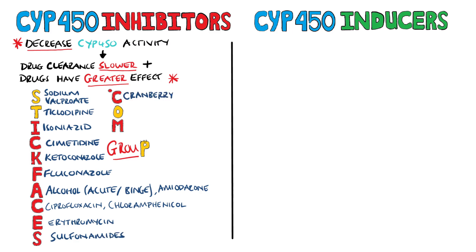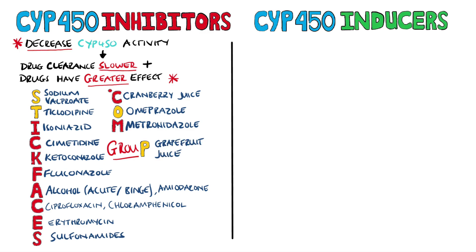The third C is to remind you of cranberry juice. O is for omeprazole, which is a proton pump inhibitor used to reduce stomach acid production. M is metronidazole, an antibiotic commonly used in GI infection that also has antiparasitic properties. Finally, we have 'group' to remind you that grapefruit juice is also an inhibitor of the cytochrome P450 enzymes. This is why you shouldn't see cranberry and grapefruit juice being given for breakfast at hospitals.